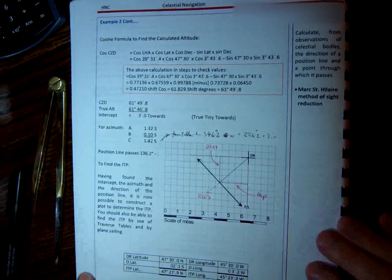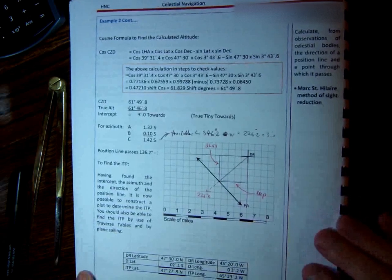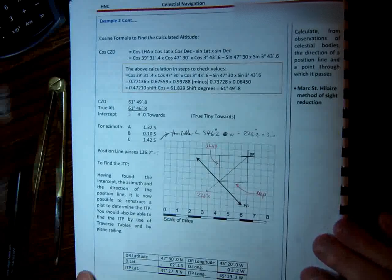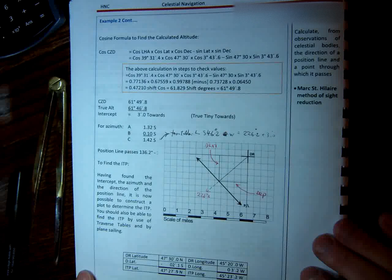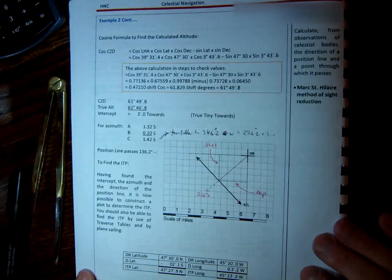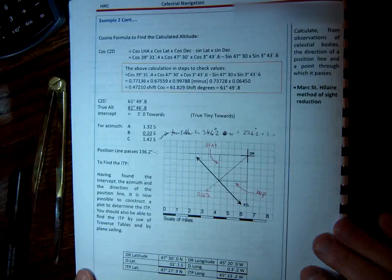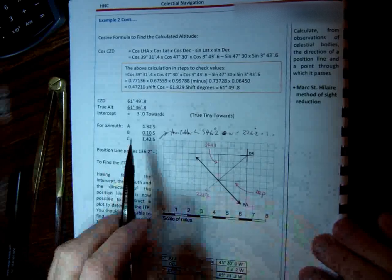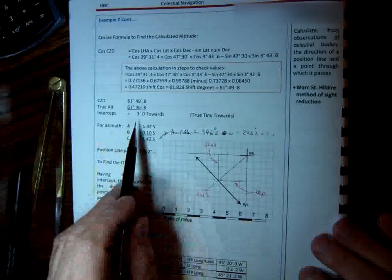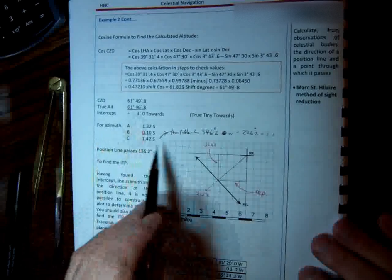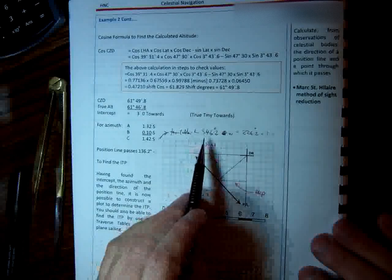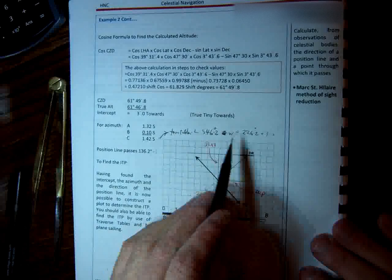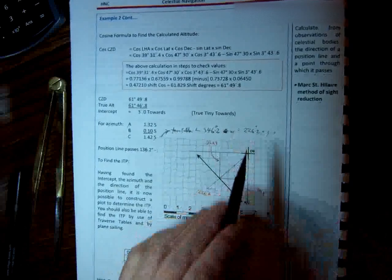We're going to look at how we plot intercepts to find the vessel's position. We're going to look at the example that's in your exercise book. In this particular exercise, we've calculated that our intercept is 3 miles towards, and that the azimuth is 46.2 degrees south, 46.2 west. In other words, a bearing of 226.2, 3 miles towards.